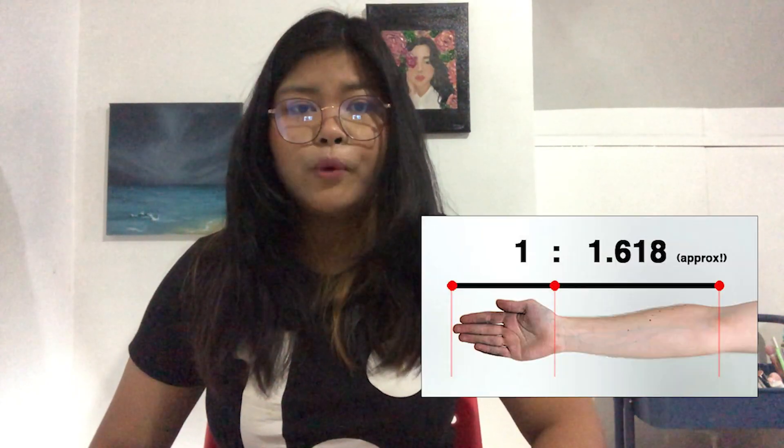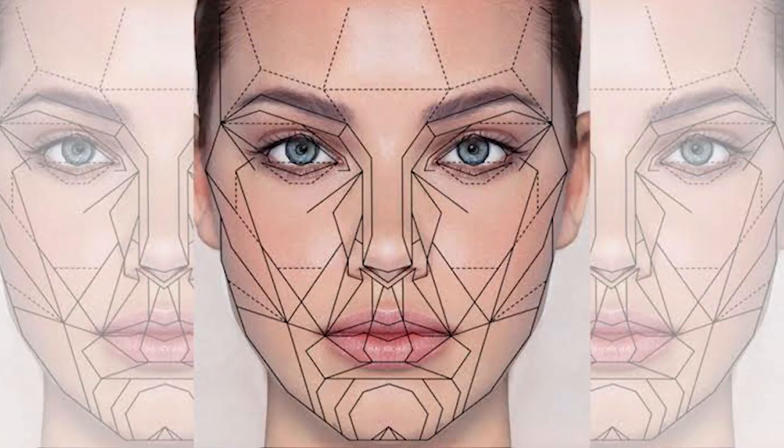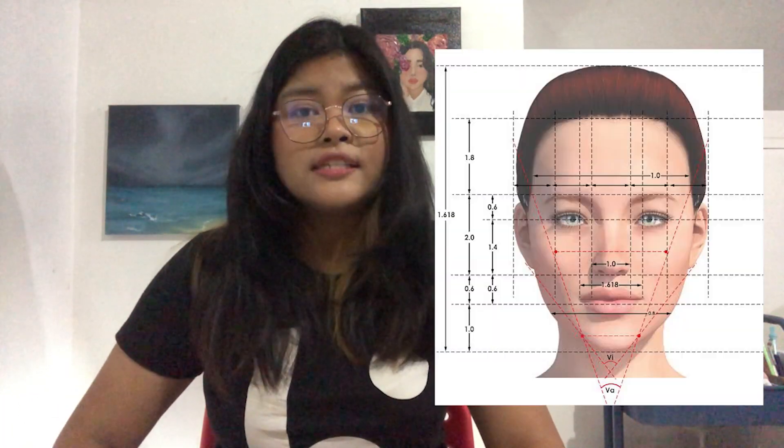Isn't it amazing that even our arms follow the golden ratio? The ratio of your forearm to your hand is 1.618 — the golden ratio. And our last example is our face. The face is based on the golden proportion. From the top of the head to the bottom of the chin, it should be 16.8 inches on average. Isn't it amazing that even the human body can demonstrate the Fibonacci sequence and the golden ratio?